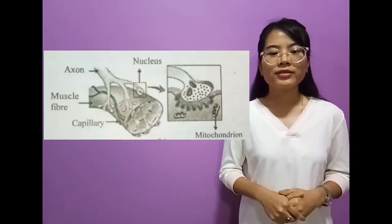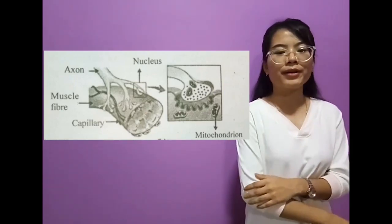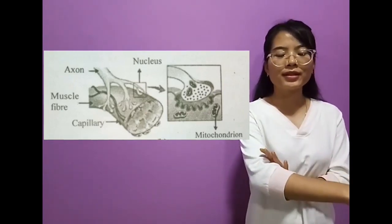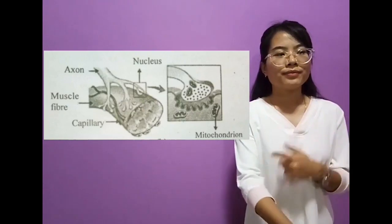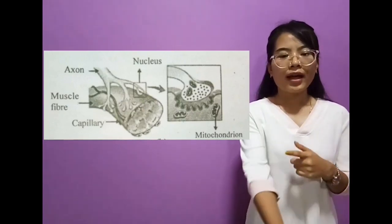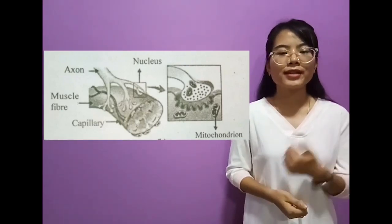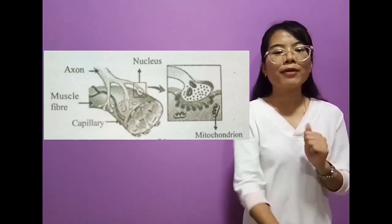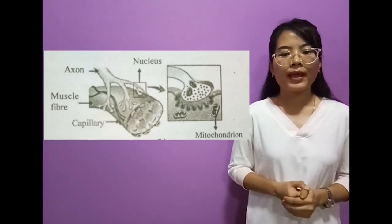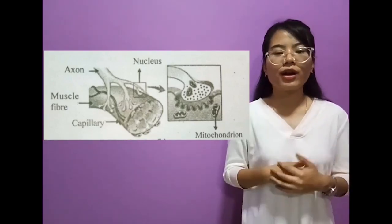Now let's discuss the neuromuscular junction. This is a specialized site between the motor neuron and the muscle fiber. Let's take an example of a muscle present in the hand. The motor neuron carries a signal from the central nervous system to the muscle fiber. When I try to contract my hand, the central nervous system sends a signal through a motor neuron, and that signal is transmitted to the muscle fiber by forming a neuromuscular junction, and we are able to contract our hand.